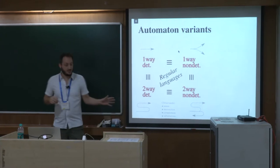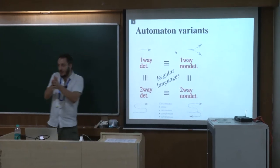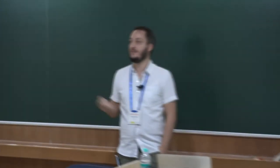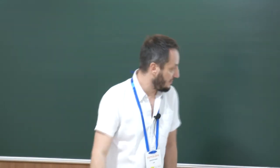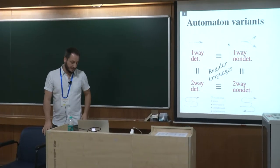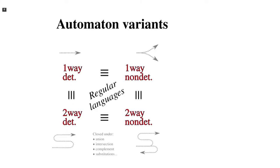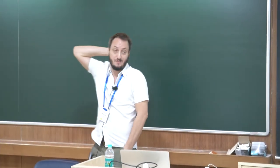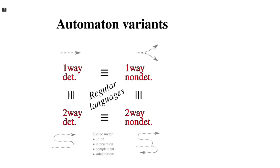You guess this tuple of transitions, check that consecutive tuples match correctly, and then run a one-way non-deterministic automaton that simulates the two-way computation. This gives you all these nice equivalences, along with closure properties like closure under union, complement, intersection, morphism, inverse images of morphisms, and so on. There are also correspondences with logic.